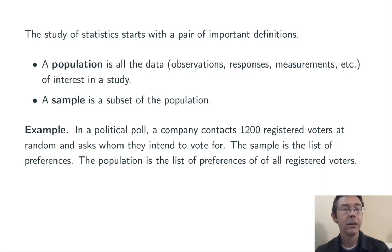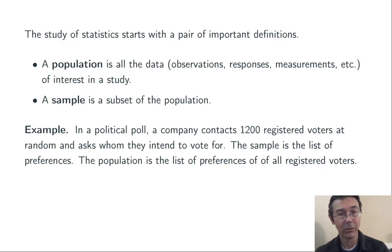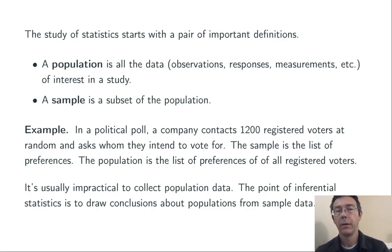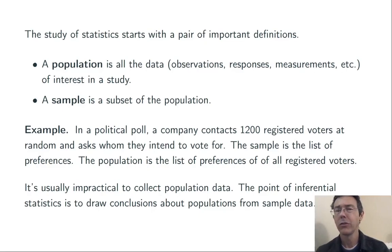Technically, population and sample both refer to those preferences, not to the individuals themselves. In general, we're not able to collect data from an entire population, just from a sample. The point of inferential statistics is to use sample data to draw conclusions about populations.